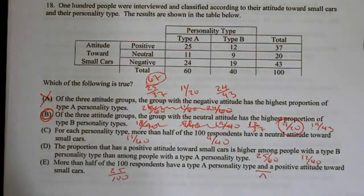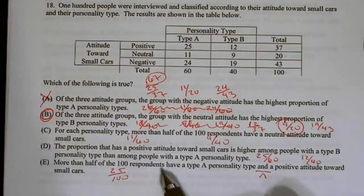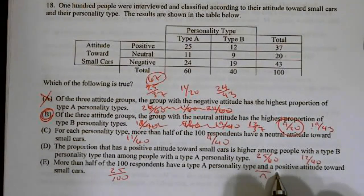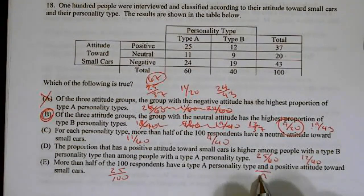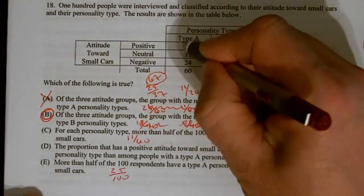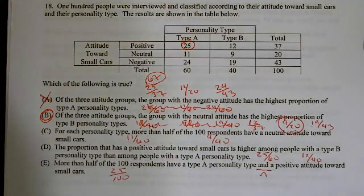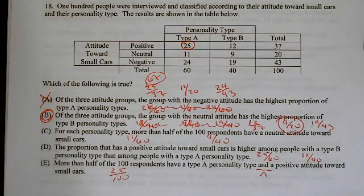And it turns out number 18 is B because of that. There's one other thing I want to show you real quickly. It says more than half of the 100 respondents have a type A personality and an attitude towards small cars and a positive attitude tells me intersection. So in this case, it would actually just be that singular value of 25 over 100. That's 25%. Can't be that. But I have a feeling that that particular question might mess people up. So I wanted to show it to you. So 18 is B.